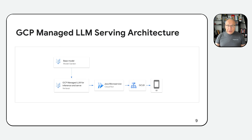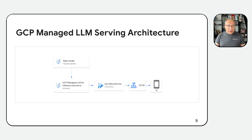How would this architecture look like? We start from picking a model from the Model Garden — this is our starting point. It's a repository of pre-trained foundation models offered by Google. You have the choice of tuning your model to better fit your specific application as an optional step. You deploy to Vertex AI, and Vertex AI will optimize the model for inference and serving, ensuring low latency and high throughput when handling user requests. In this case, we use a Java microservice deployed in Cloud Run to interact with the model.